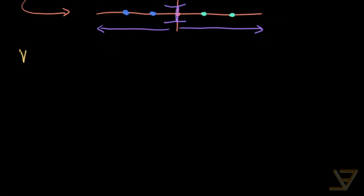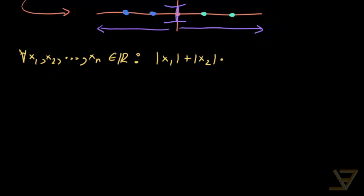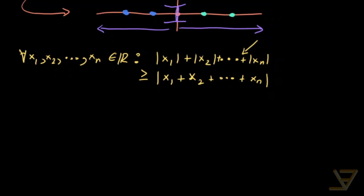The general triangle inequality says: for all x₁, x₂, all the way through to xₙ, the sum of the absolute values is greater than or equal to the absolute value of the sum. So on the left we have the sum of absolute values, and on the right we have the absolute value of the sum, and we're saying we can always compare them in the same way. We're going to be using induction — hopefully you've seen that method before, but if not, you should be able to pick up on it through this proof.